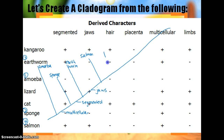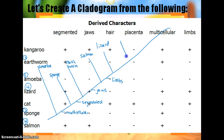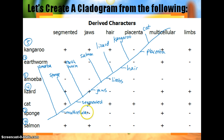Next we look for the organism with four characteristics — that's the lizard. We compare characteristics and see which one hasn't been used yet: segmented and jaws are already used, multicellular as well, but we haven't used limbs, so that goes here. Then we look for the next individual, which is the kangaroo, and the characteristic there is hair. And then our last individual is the cat, and the difference there is placenta. So again, once a characteristic is labeled, everything below it does not have that trait, but everything above it does. And that's how a cladogram is done.